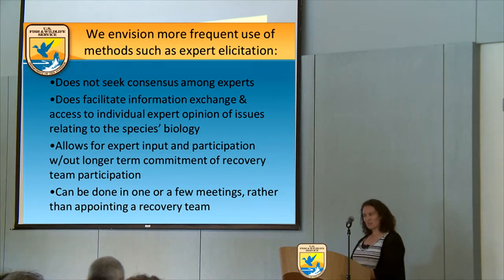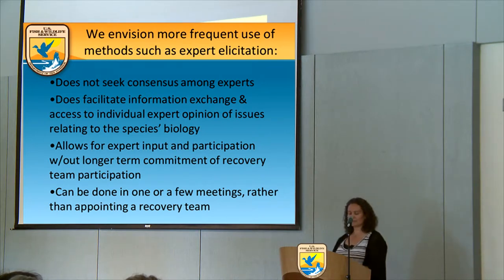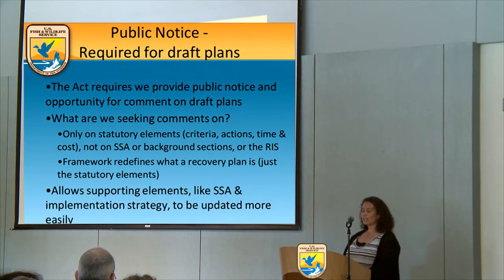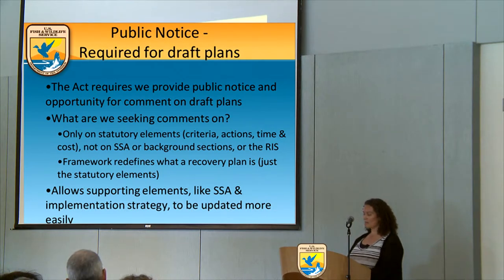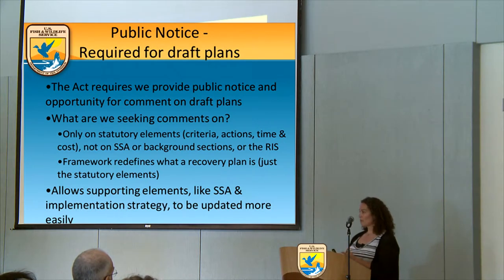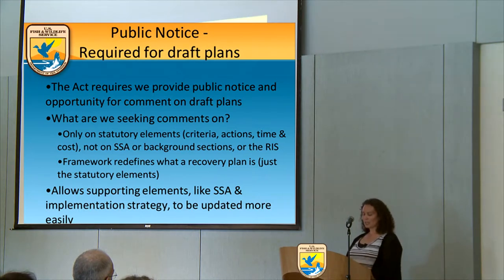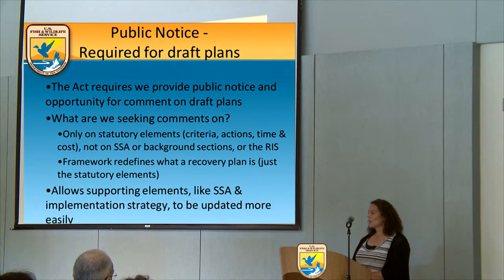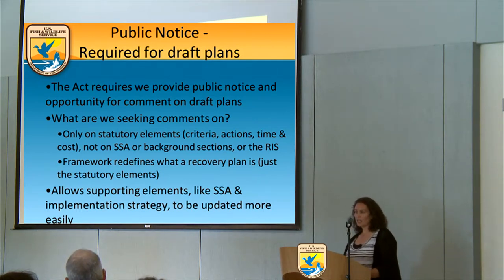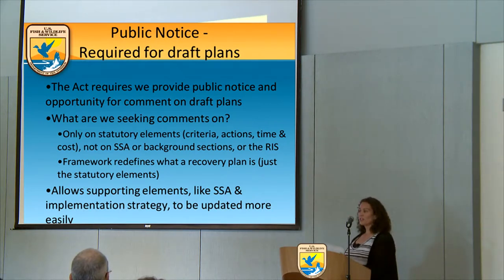Often, when you ask people to be on a recovery team, it's an open-ended request on people's time and efforts. Public notice hasn't changed — we're still required to seek public comment on our recovery plans. What is different is that we've broken the recovery plan into three documents, so only the recovery plan proper with the three statutory requirements is what we're required to get public comment on. The SSA and implementation strategy will also be available to the public, and that gives us more flexibility to update those regularly, incorporate new information, adjust to changes on the landscape, and engage more with our partners.